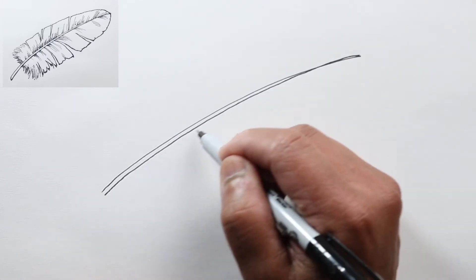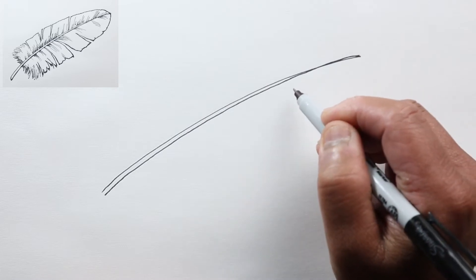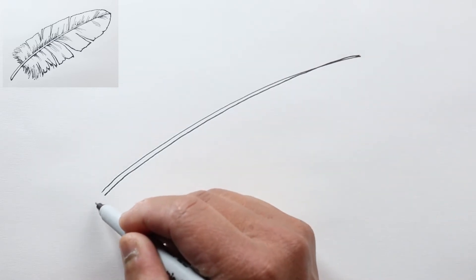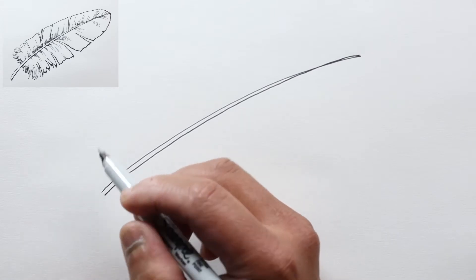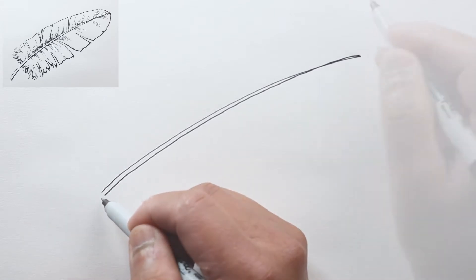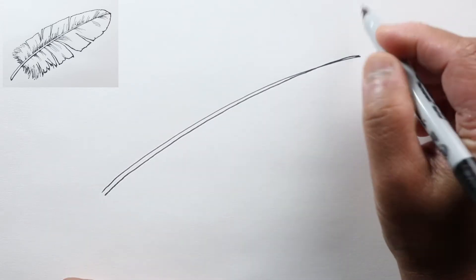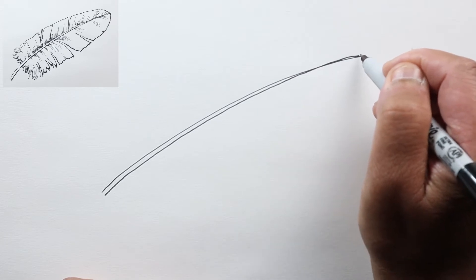So this center section of the feather is called the rachis, and down here would be the quill. This is what they would use before to write. So let's go to the tip here of the feather and start heading back this way.